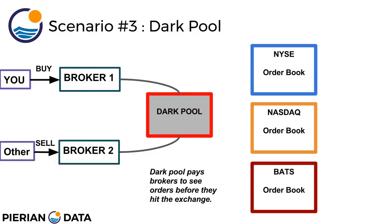Let's take a look at a third example that involves what's known as a dark pool. Imagine you send a buy order for a particular stock to your broker, and another person is selling that same stock to a different broker — broker number two. What could end up happening is that both those orders go to a dark pool first and never actually reach the exchanges. A dark pool pays brokers to see orders before they hit the exchange. It's a private exchange or forum for trading securities, but unlike stock exchanges, dark pools aren't accessible to the public and aren't transparent.